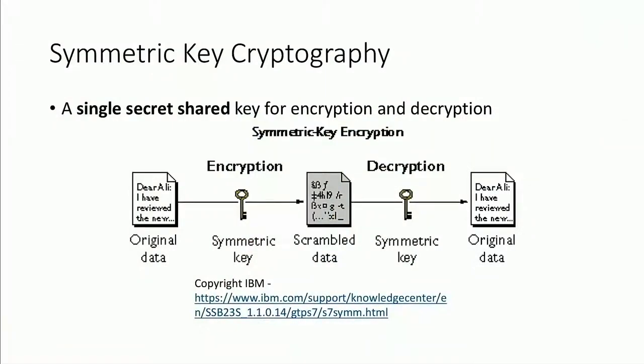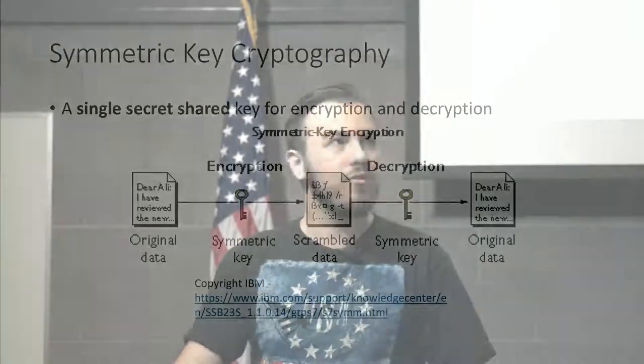Let's talk about symmetric key cryptography. One of the big parts of modern crypto is symmetric keys — the idea that a single shared key or secret can be used for both encryption and decryption. You take the original data, encrypt it with your key, get the scrambled cipher data, and decrypt it to get the original data back when you use the same key. Cipher and decipher are the more common words in cryptography for these two actions.